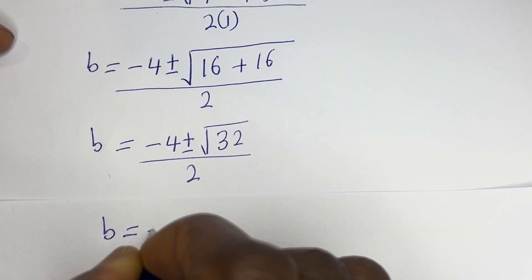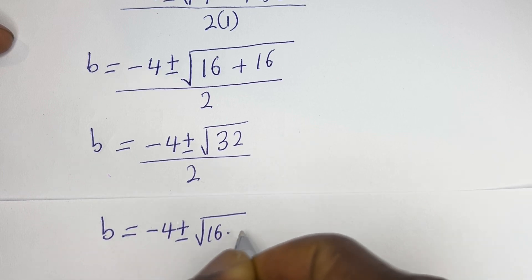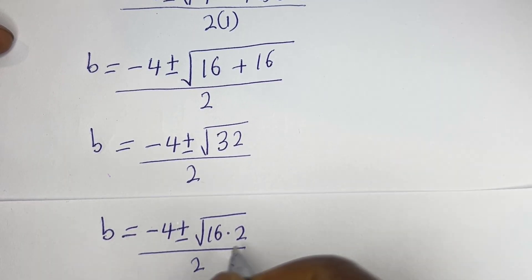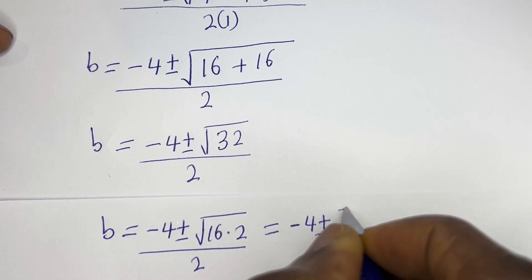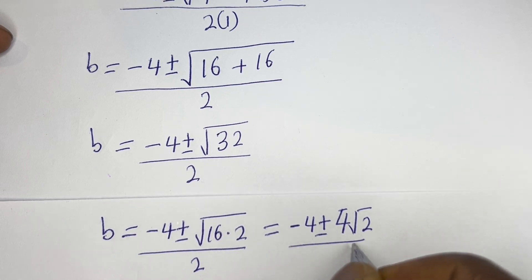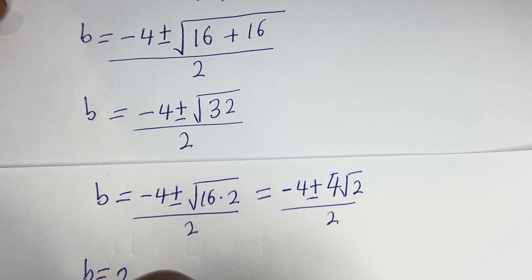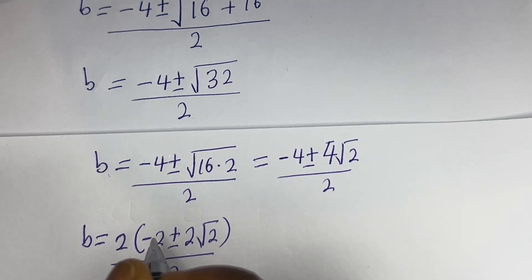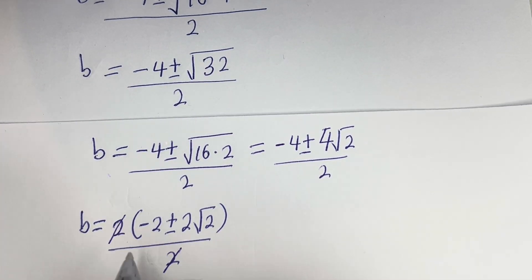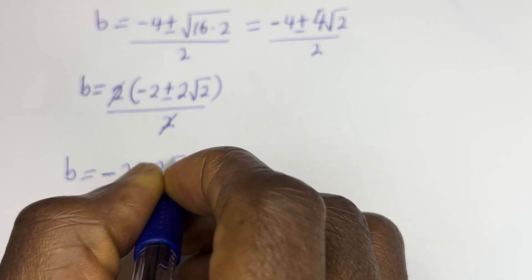b is equal to minus 4 plus or minus the square root of 32 over 2. This can be written as square root of 16 multiplied by 2, so the square root of 16 times 2 is 4 root 2. Therefore, b is equal to minus 4 plus or minus 4 root 2, all over 2, which simplifies to b is equal to minus 2 plus or minus 2 root 2.